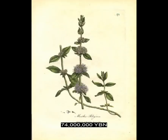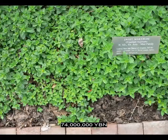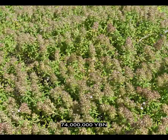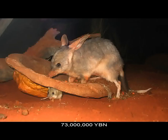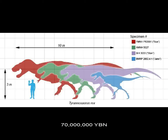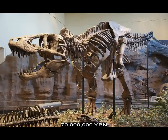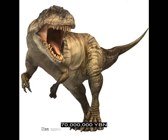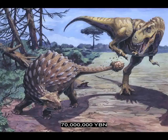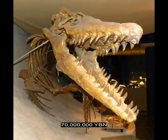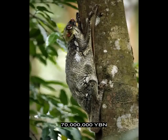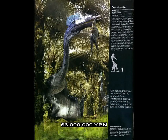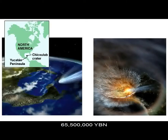The asterids Lamiales evolve—ancestor of many spices: mint, basil, marjoram, oregano, rosemary, sage, savory, thyme, teak, sesame, olive, ash, lilac, and jasmine. The marsupials bandicoots and bilbies evolve. Two of the largest meat-eating dinosaurs known are common—both theropods. Tyrannosaurus rex is the top predator in North America, and Giganotosaurus is the top predator in South America. The thyreophoran ankylosaurs evolve—the shield-backed and/or club-tailed dinosaurs. The marine reptiles mosasaurs evolve. The birds Podicipediformes evolve—grebes. The eutheria tree-shrews and colugos evolve. The largest pterosaur and largest flying animal ever known: Quetzalcoatlus. The end-Cretaceous mass extinction: 47% of all genera are observed extinct.